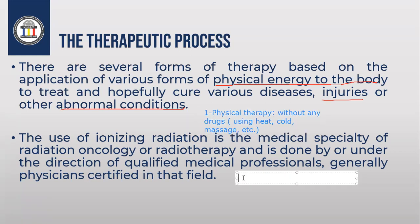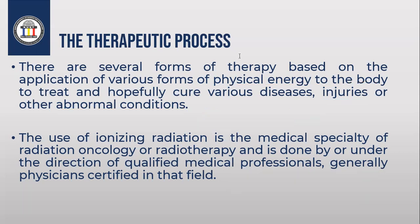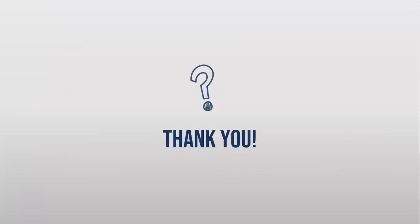The second type of therapy is radiation therapy. Radiation therapy uses radiation exposure or drugs for treatment. So we have two types of treatments: physical therapy, which is without any drugs — for example, cold, heat, and massage — and radiation therapy, which uses radiation exposure or drugs for treatment. This is the end of part one. Thank you very much.